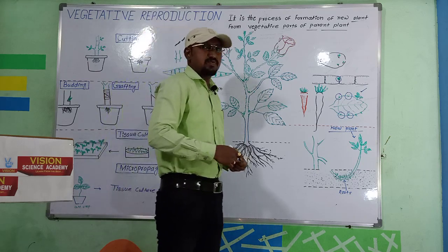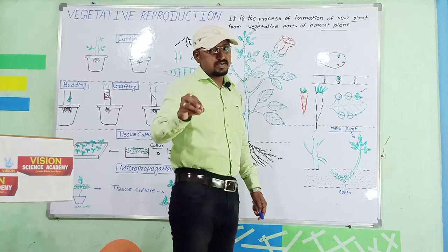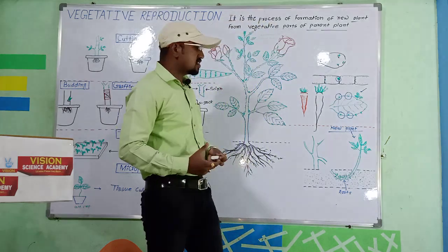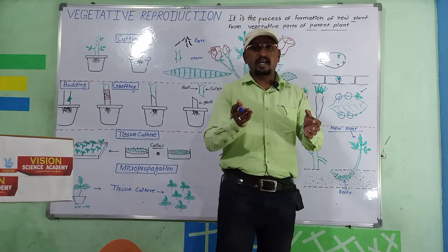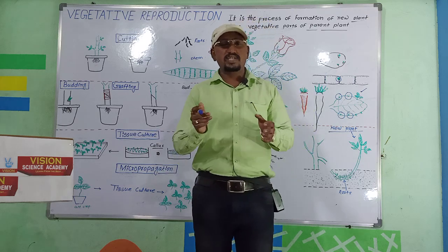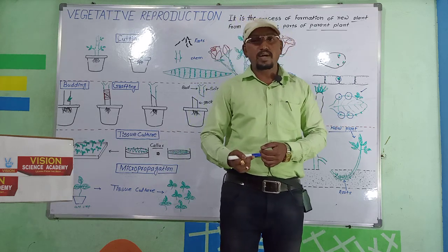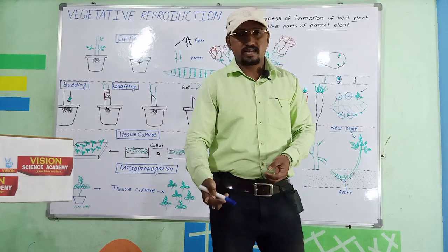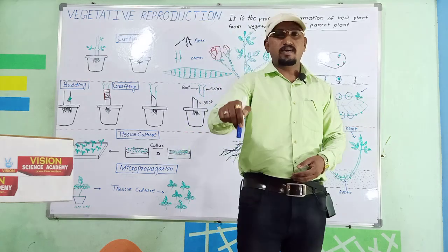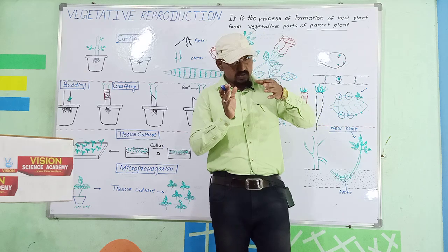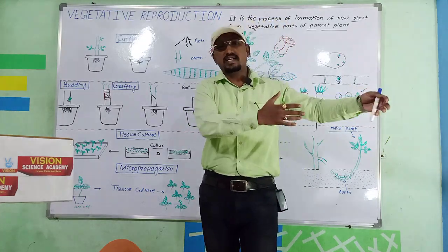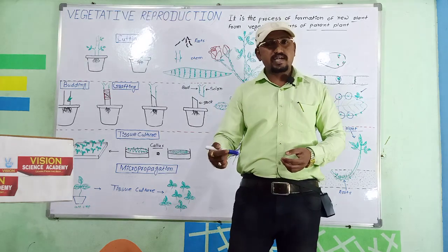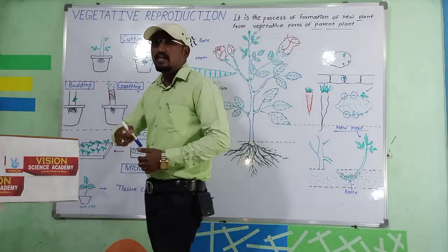Vegetative propagation is a mode of reproduction in which plants can reproduce either through root, stem, or leaves. It can be natural or artificial. Artificial vegetative propagation is done for human welfare, one technique of which is cutting.